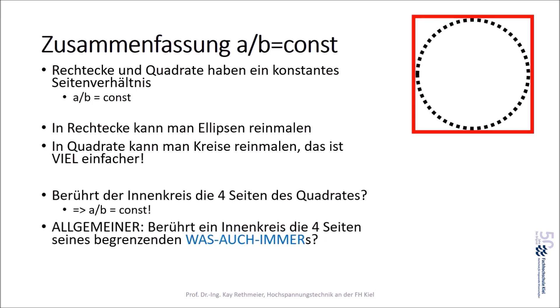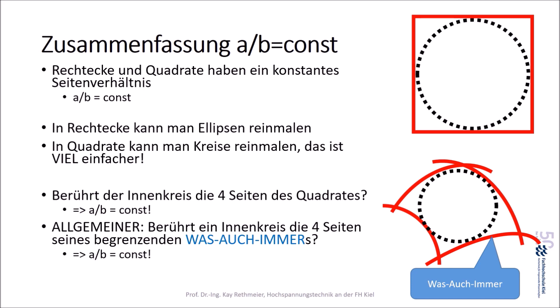Etwas allgemeiner, und jetzt wird es interessant für elektrische Feldbilder: berührt ein Innenkreis die vier Seiten seines begrenzenden Was-auch-Immers? Wie sieht so ein Was-auch-immer aus? Das könnte so eine begrenzende Struktur sein. Und die Frage ist auch hier: kann ich einen Kreis reinmalen, der ungefähr alle vier Begrenzungsseiten berührt? Dann habe ich das Verhältnis a zu b gleich konstant.